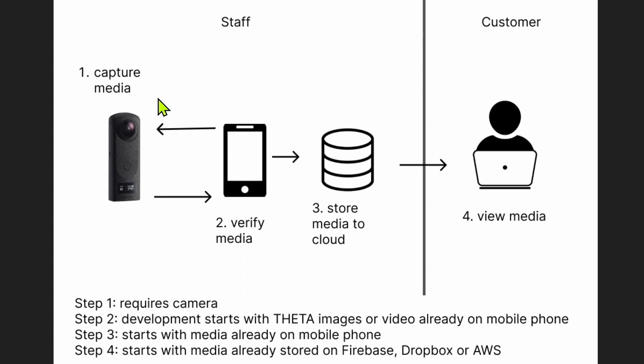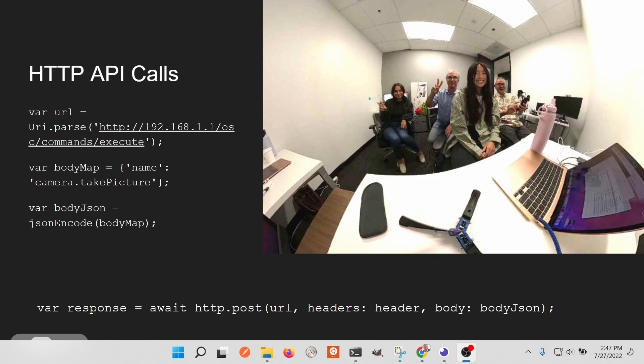After step one, steps two through four do not require a camera. In step two, the media is transferred from the camera onto an iPhone or Android device and stored in the gallery. Once on the gallery, a series of tutorials show how to display the 360 media — video or still — and push it up to a cloud and view it in a viewer. For still images we're using Panorama. Even without a 360 camera, we can supply media for both still images and videos so you can build a 360 app.